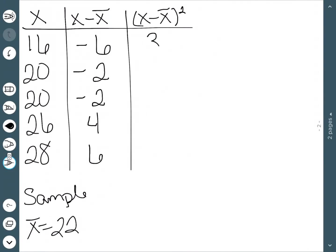We then square all these numbers: 36, 4, 4, 16, and 36. And then when we add this column up, we get 96.